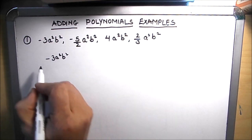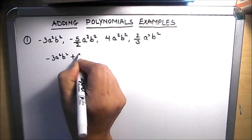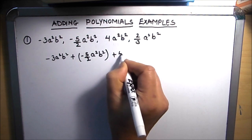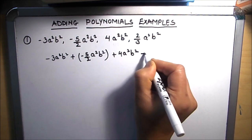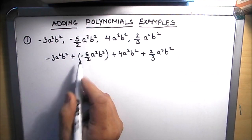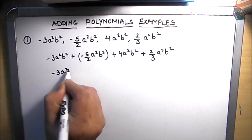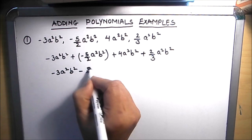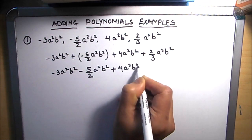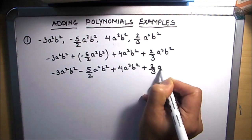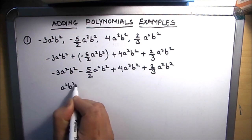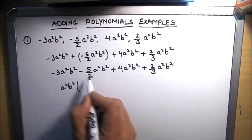So we can write them in a single line and add directly: minus 3a²b² plus minus 5/2 a²b² plus 4a²b² plus 2/3 a²b². First we will open the brackets, so this becomes minus 3a²b² minus 5/2 a²b² plus 4a²b² plus 2/3 a²b². As all the variables are the same, we can take a²b² as common and write the coefficients.